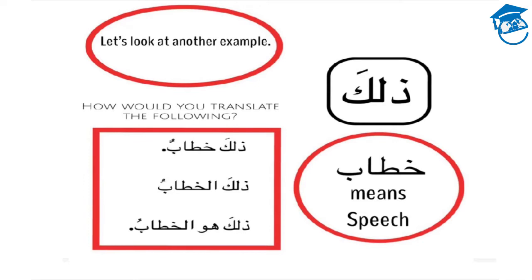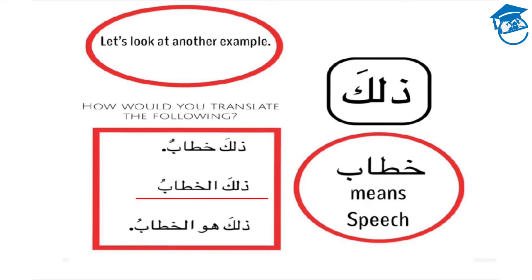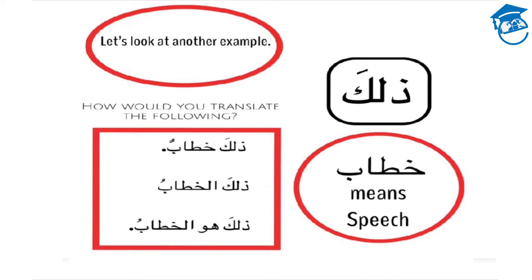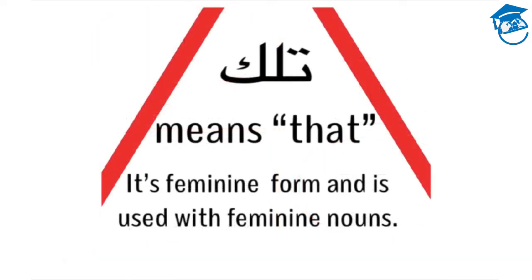Let's look at another example using valika. This time we're going to use the noun chitab. Chitab means speech. Valika chitabun means that is a speech — it's a full sentence. Valika al-chitabu means that is the speech. And finally, valika huwa el-chitabu means that is the speech.